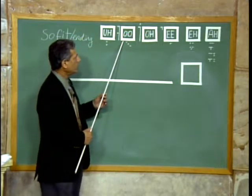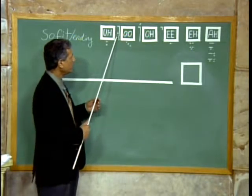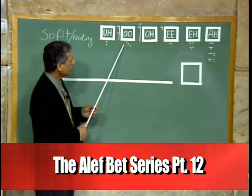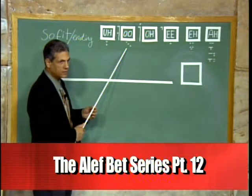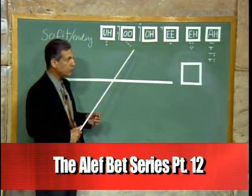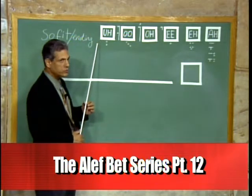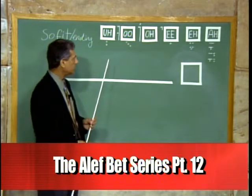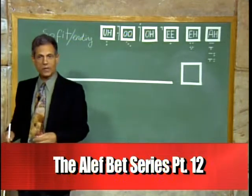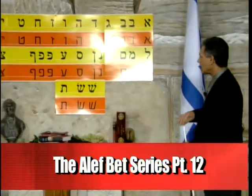The sound of U goes in two ways: either you have a Vav and a dot in the middle — U — or you have three diagonal dots underneath the letter to produce the sound of U. And the last one is the E, which is a short vowel. I'm going to work through the string of letters, the Aleph Bet, and we'll go over it real quick again, just to remind us.